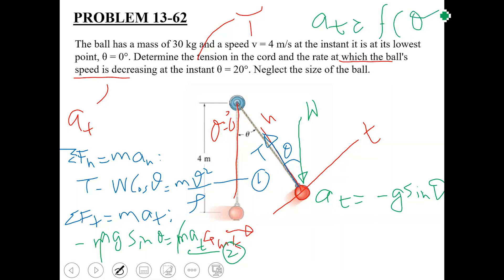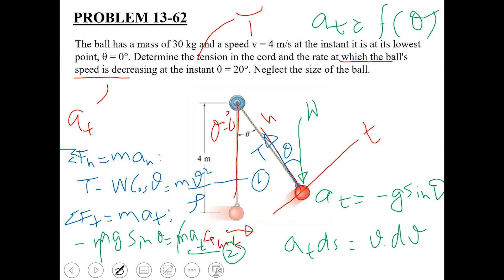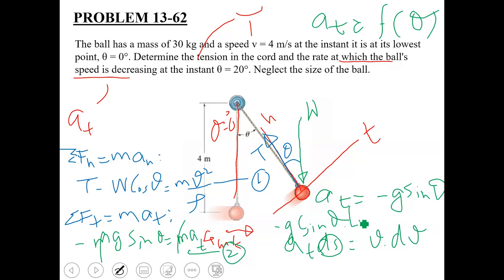Since at is given as a function of theta and not constant, we use the kinematic relation: at·ds equals v·dv. Substituting at equals minus g·sinθ, and noting that ds equals r·dθ, we write: minus g·sinθ · r·dθ equals v·dv. With r equal to 4, this becomes: minus g·sinθ · 4·dθ equals v·dv.